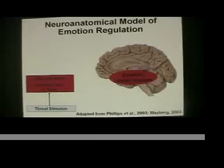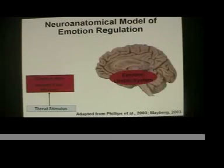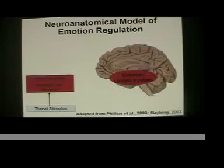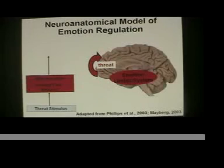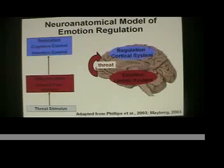When there's a threat stimulus, this quickly triggers a shift in affective state — for example, anxiety, fear, arousal, or worry. This has been linked to the limbic system, a distributed set of brain regions implicated in emotion detection, emotion awareness, and emotion generation. This then sends a rapid bottom-up signal saying 'something is threatening in my environment,' which quickly activates cortical regions where different types of regulatory processes can be activated.